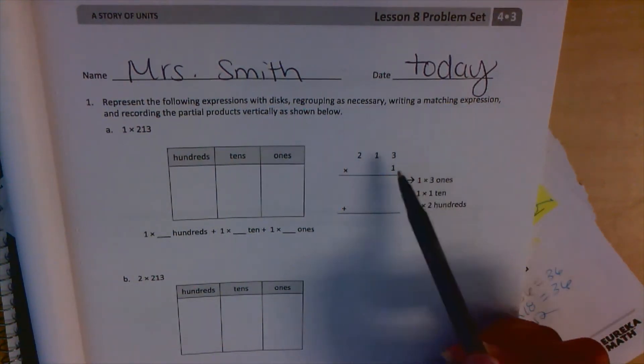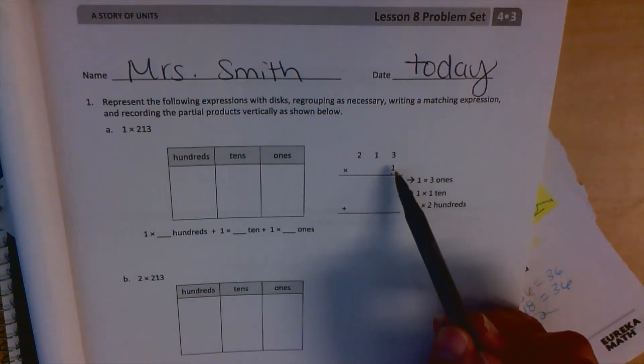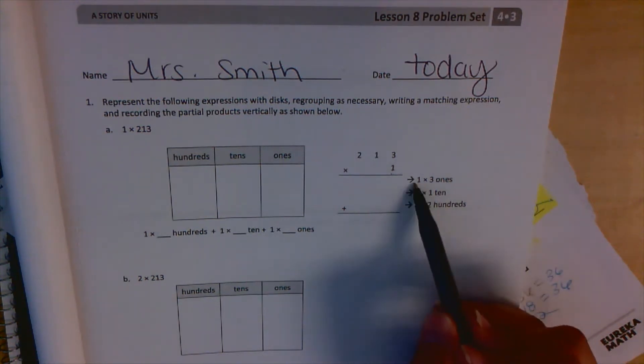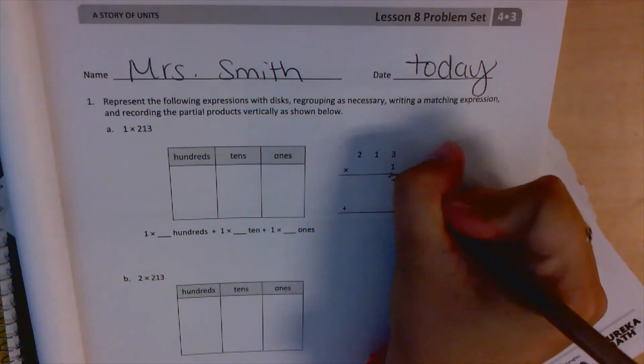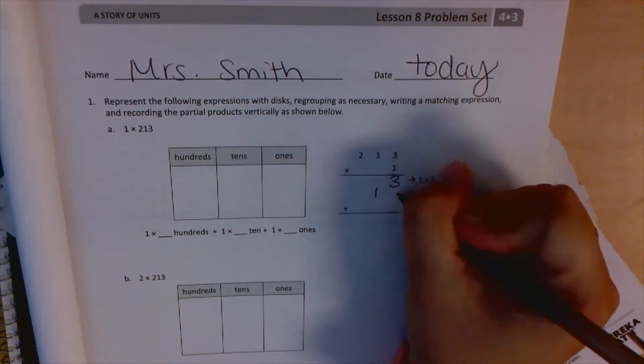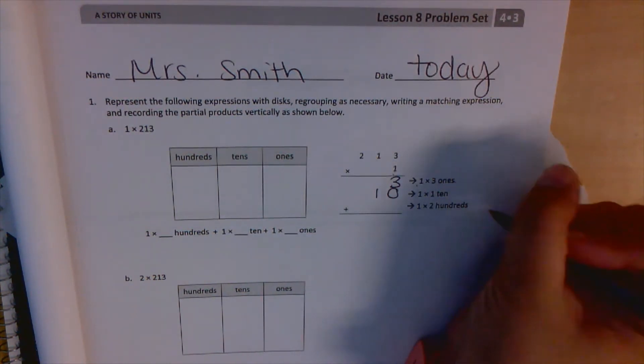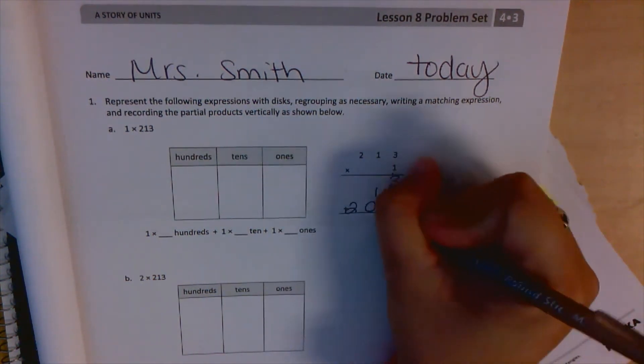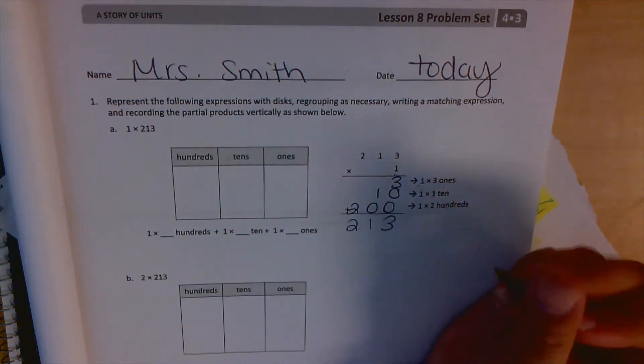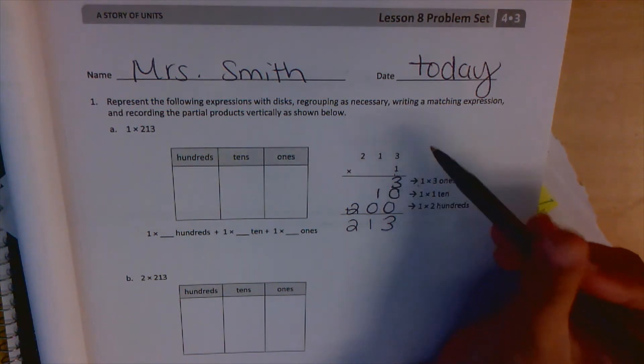So we have 1 times 213. 1 needs to be multiplied by each number in each place value. 1 times 3 ones is 3 ones. 1 times 1 ten is 10. And 1 times 2 hundreds is 200. Add that together: 213, which makes sense because if I have one group of 213, I have 213.